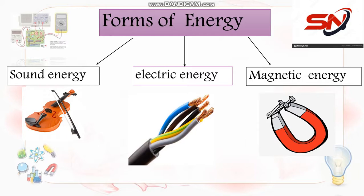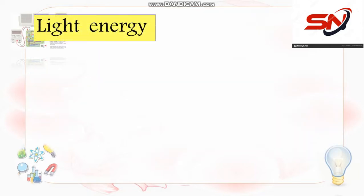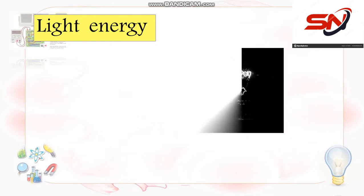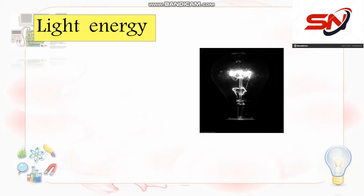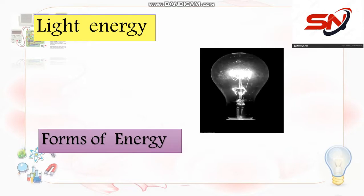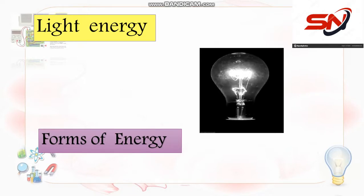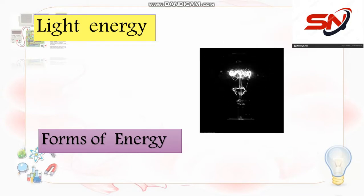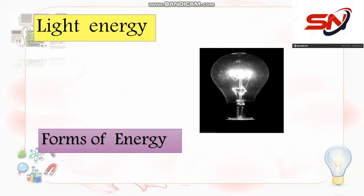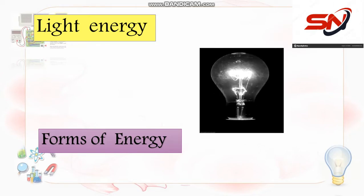وعندنا كمان forms تانية، بس أهم حاجة عندنا النهاردة هي light energy، لأنه هو ده درس النهاردة. Light energy comes from the lamp — هي النور اللي طالع من اللمبة أو من أي حاجة بتطلع نور، اسمها light energy. Light energy is a form of energy — هو نوع من أنواع الأنرجي.